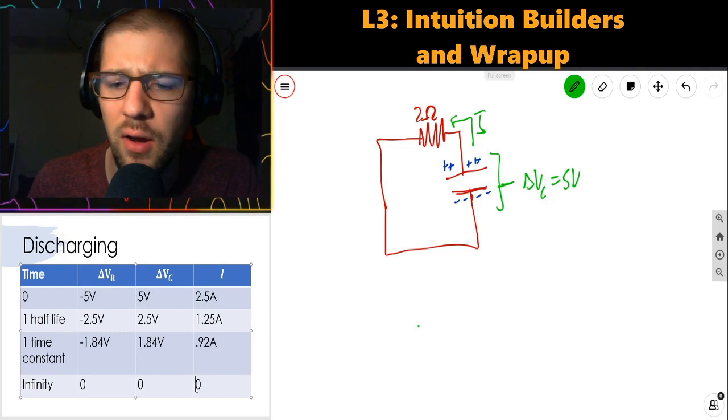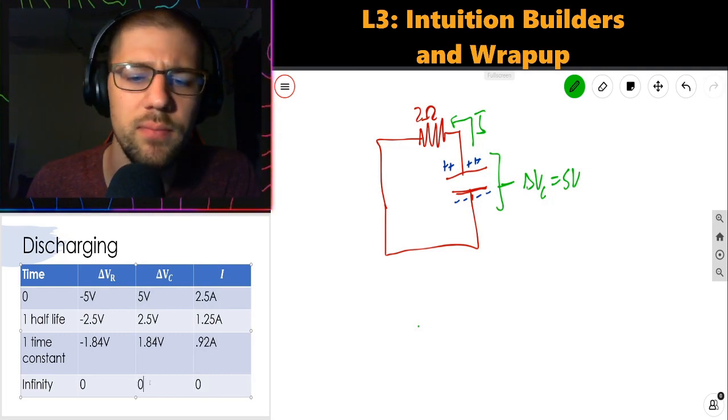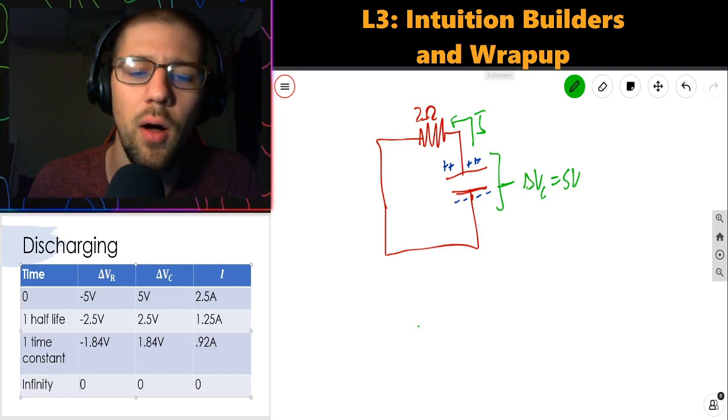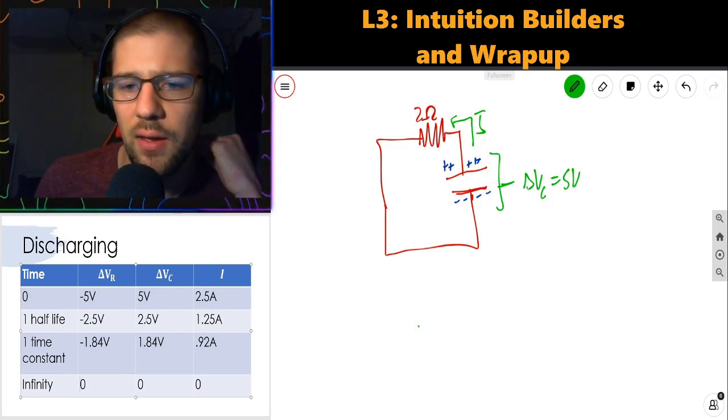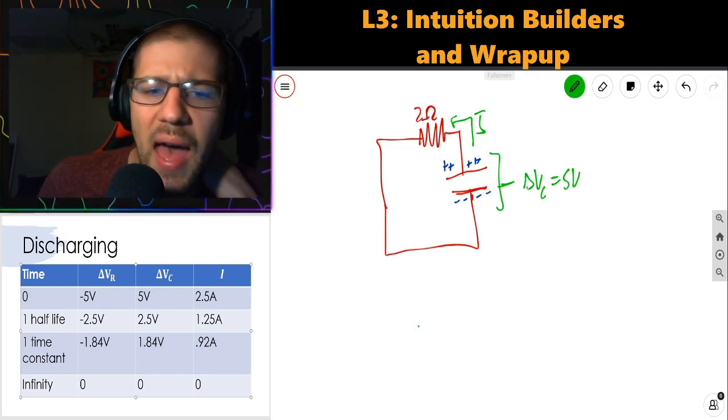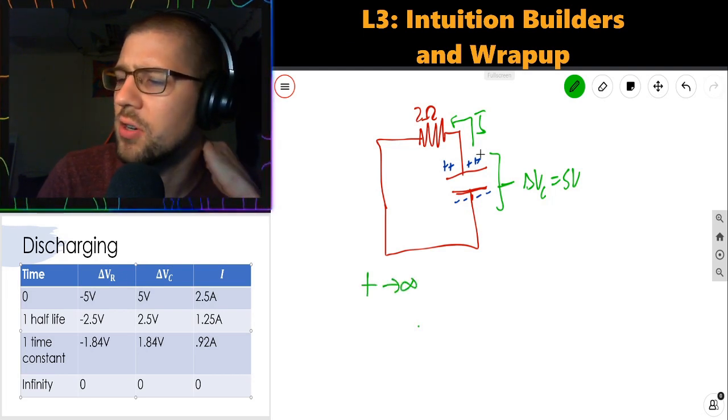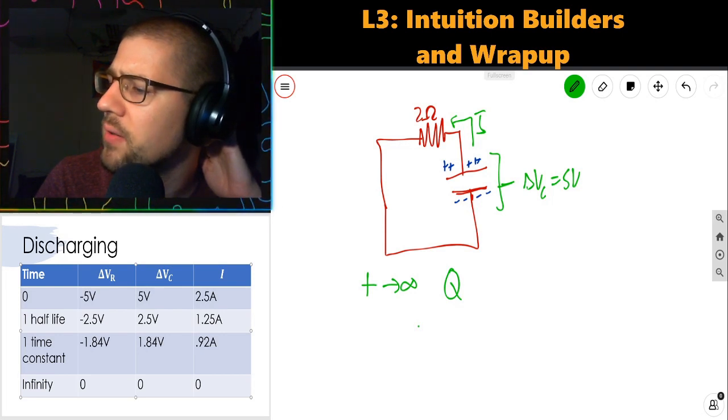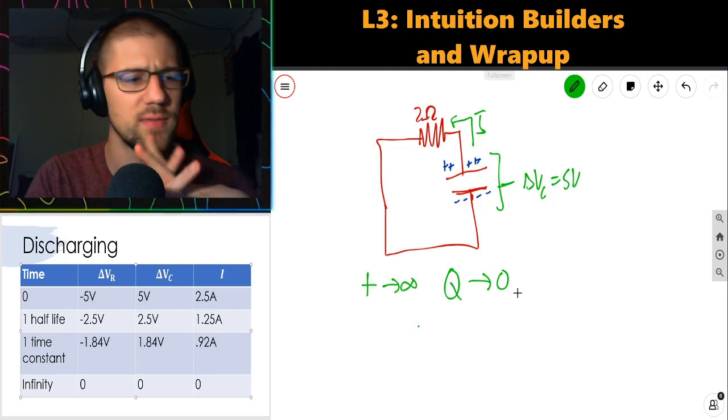And as we go out to infinity, current dies down to 0. When current dies down to 0, the resistor voltage is 0. And since the resistor is eating up all of the voltage provided by the capacitor, the capacitor's voltage is also 0 at that point. At T equals infinity, the Q, the charge on the capacitor, goes to 0.